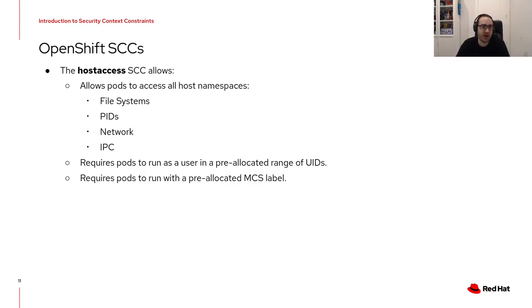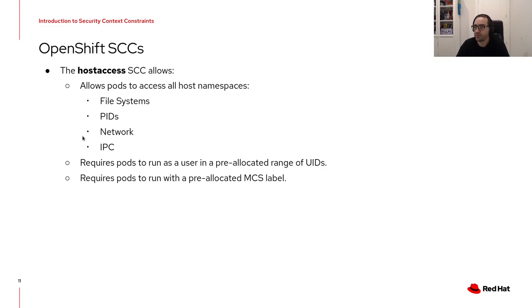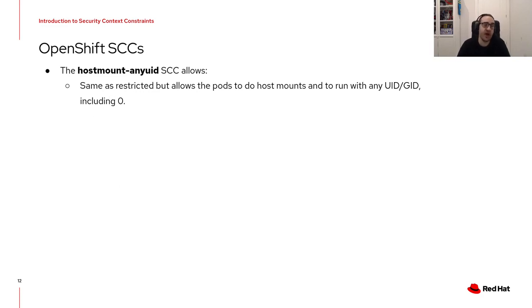The third SCC is host access. Host access permits access to all host namespaces — meaning access to the node file system, PIDs, IPC, and network — however it still requires pods to run with a UID and SELinux context allocated to the namespace. This SCC should only be used by trusted pods, so grant it with caution. The fourth is host mount anyUID, which provides all the features of the restricted SCC but allows host mounts and any UID. This is primarily used by the persistent volume recycler, but be careful as you can mount host volumes and set any UID/GID.